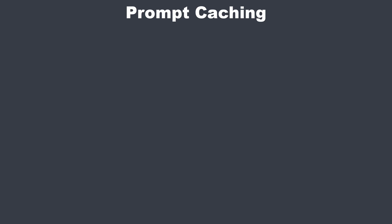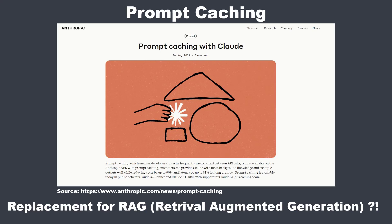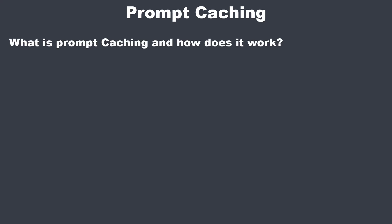Hi everyone, today I'm going to show you a very cool new feature that Anthropic introduced: prompt caching with Claude. I'm going to show you what this is all about, and also address a topic I've seen discussed several times — do you still need RAG when you have prompt caching? So first, what is prompt caching and how does it work?